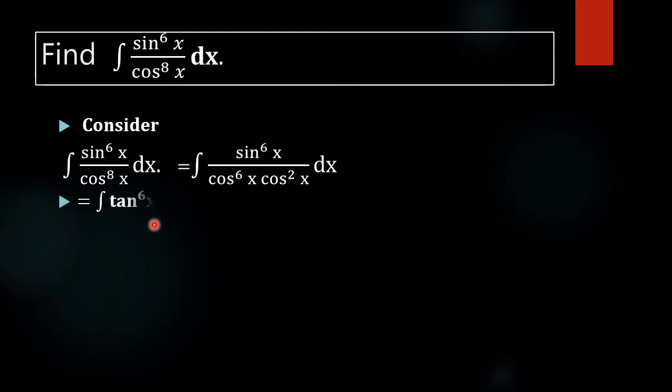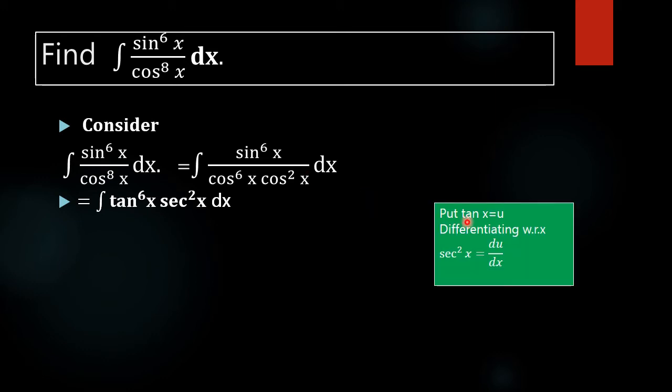So sin raised to 6x by cos raised to 6x is tan raised to 6x, and 1 by cos square x gives sec square x dx. So we have tan to the 6x and sec square x dx. We know that the derivative of tan x is sec square x dx, so we can apply the substitution method to find the value of the integral.